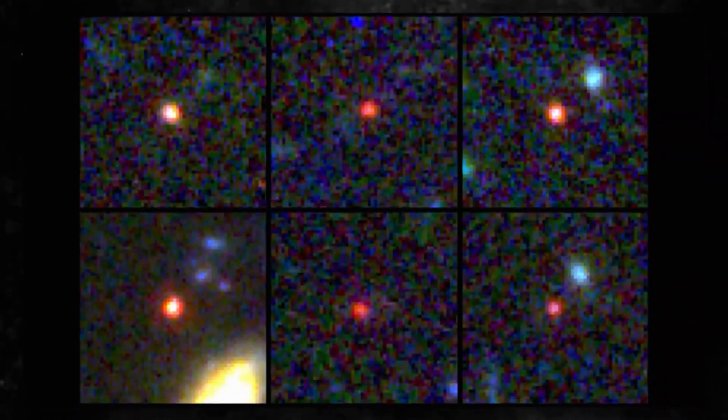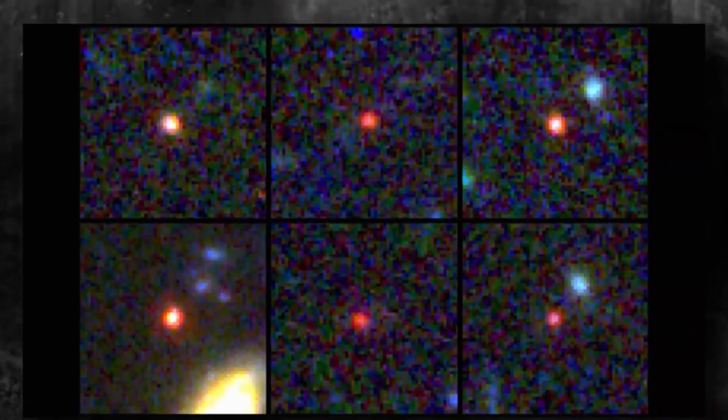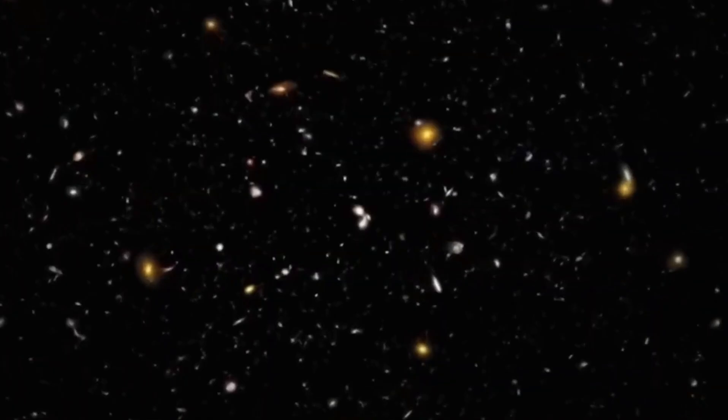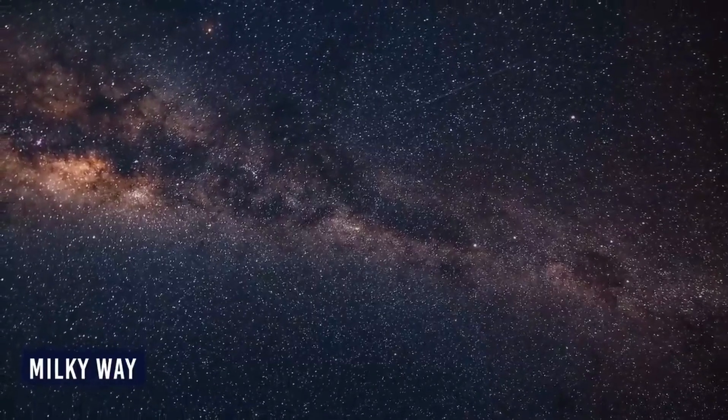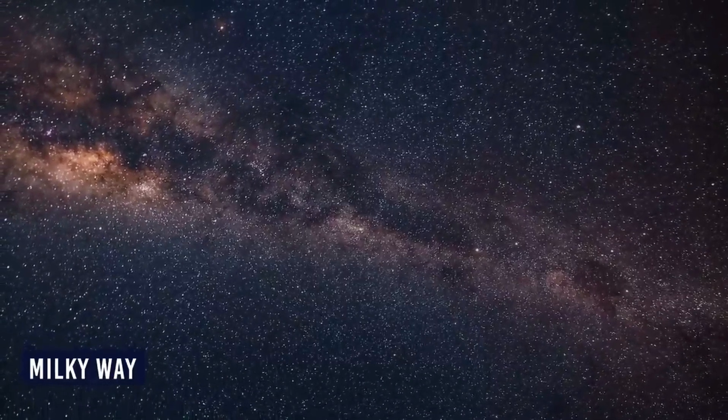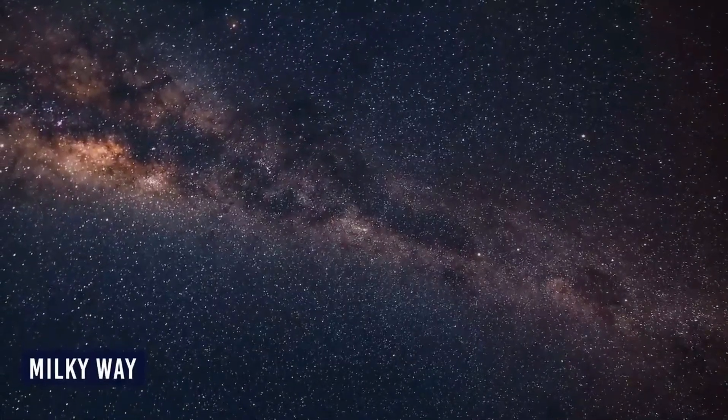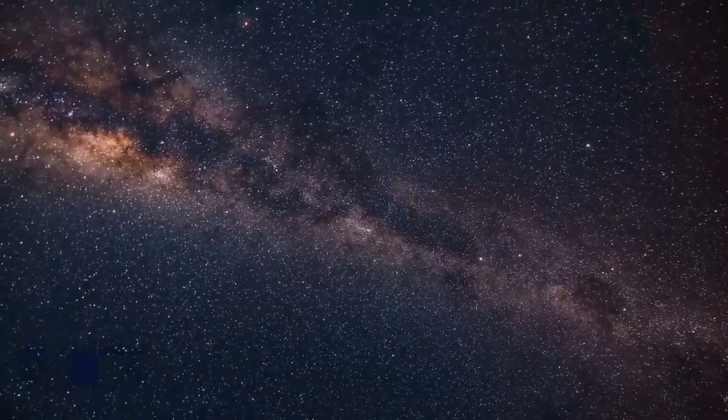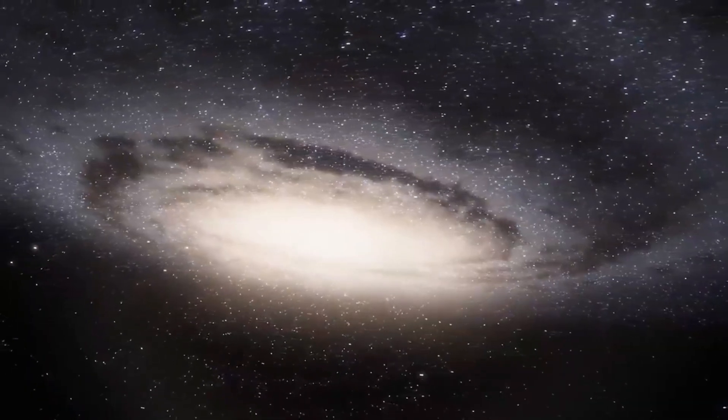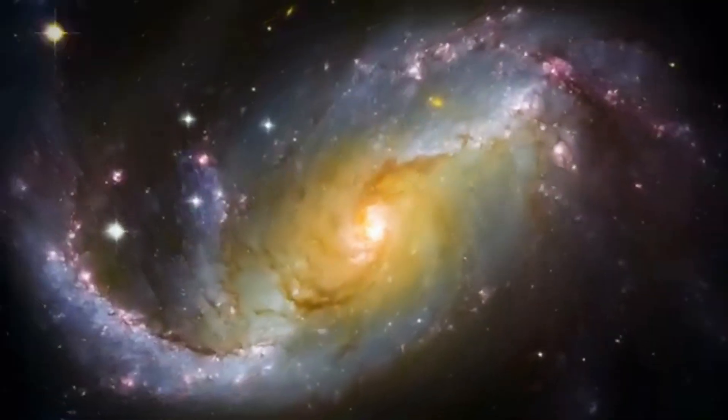However, Webb sees primarily in the infrared, whereas Hubble sees primarily in the visible spectrum, giving it a new perspective on a region of space that Hubble had previously found nothing particularly noteworthy. The new study's results were intriguing. Six blotches of extremely brilliant, red, yet fuzzy light stood out from the background image, which was otherwise ordinary.